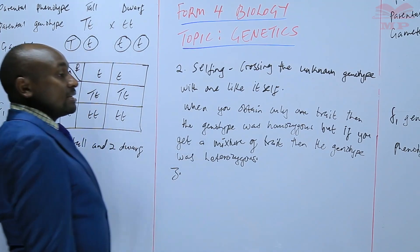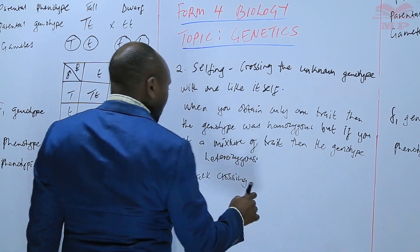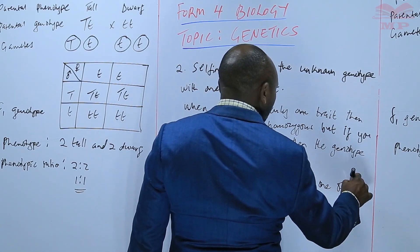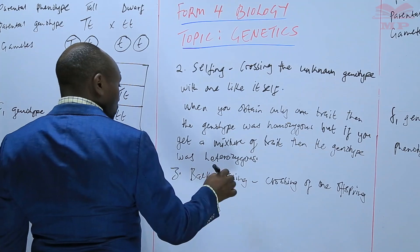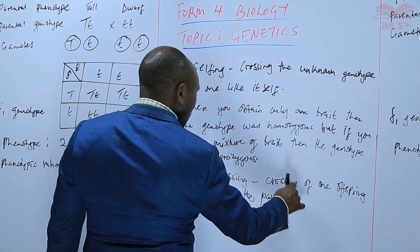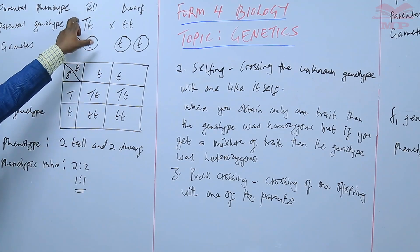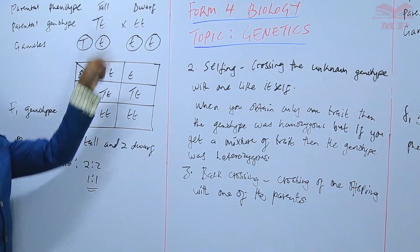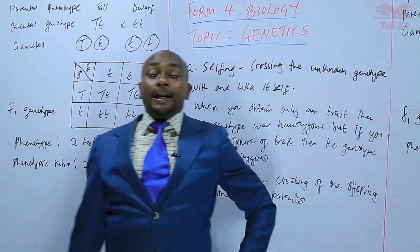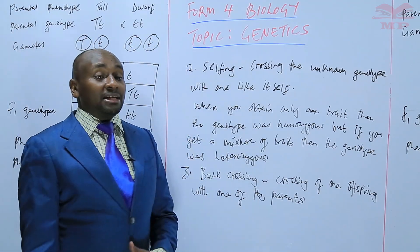The third way of determining the unknown genotype is backcrossing. Backcrossing is the crossing of one offspring with one of the parents. For example, if I take an offspring and cross it with one of the parents, that is backcrossing — going back to a parent. So selfing, backcrossing, and crossing with the homozygous recessive are all ways of determining the unknown genotype.